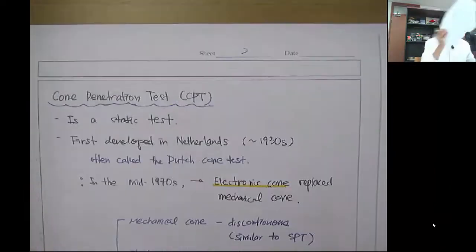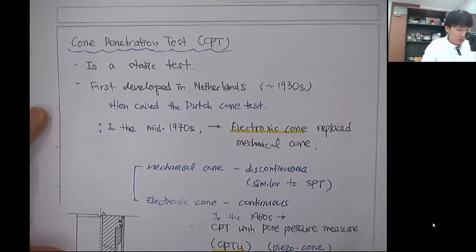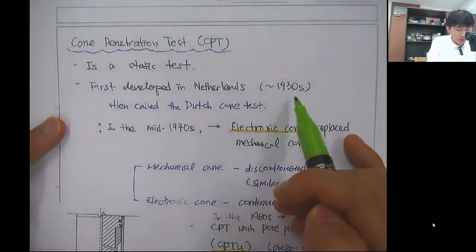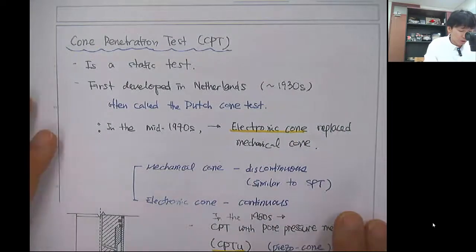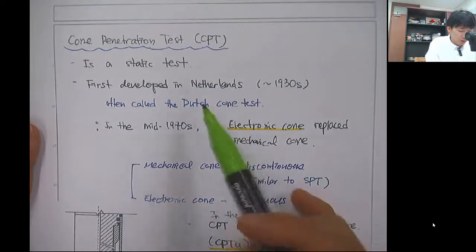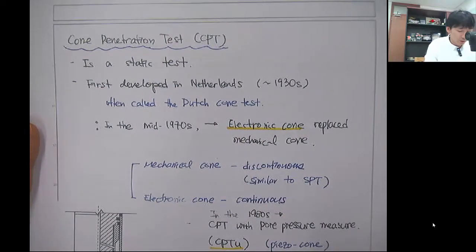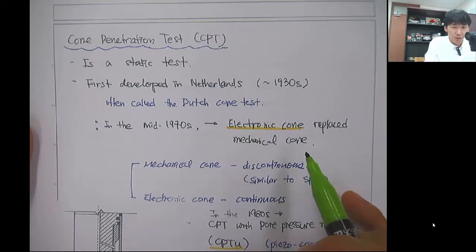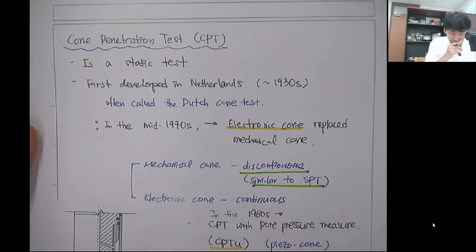The cone penetration test, CPT, is a static test first developed in the Netherlands in the 1930s. It's often called the Dutch cone test because it's from the Netherlands. At that time it was a mechanical cone, so it was quite discontinuous and similar to SPT.